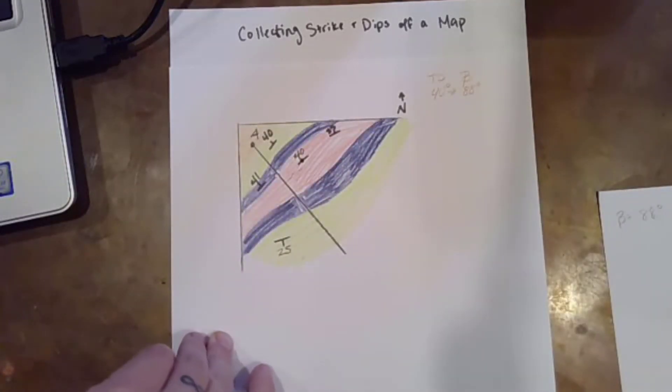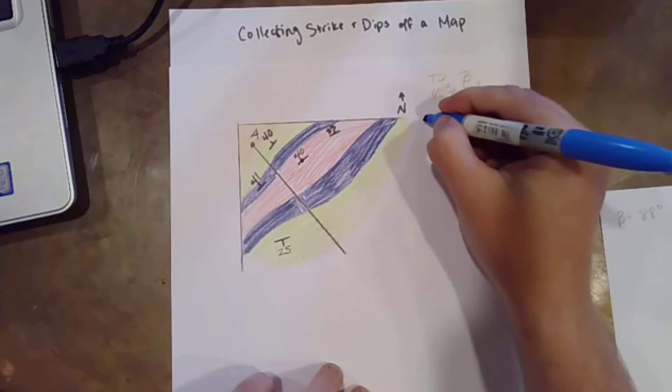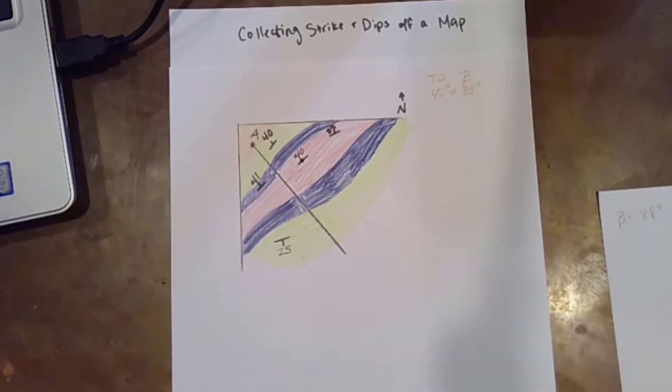All right, so now I need to know what the apparent dip is. What if I'm doing a cross section that is vertically exaggerated by one time, what is the actual degree amount that I'm going to plot on that cross section? So here's what I'm going to do. I'm going to use the formula. Oh, that's the one my son got a hold of. Sorry, I knew there was one of the Sharpies in this bunch that Max had a heyday with.